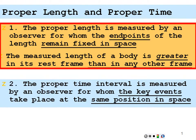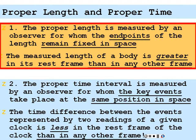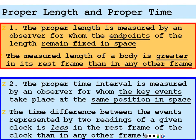The proper time interval is measured by an observer for whom the key events take place at the same position in space. So if you have a clock and the key events take place in your reference frame where your clock is, then you have the proper time. Anybody else measuring those events, moving relative to you, is going to measure a longer time for those events. A time difference between the events represented by two readings of a given clock is less in the rest frame of the clock than in any other frame. Those are your rules.